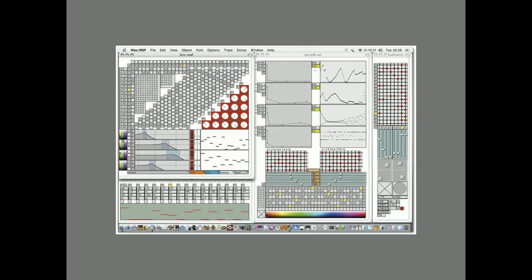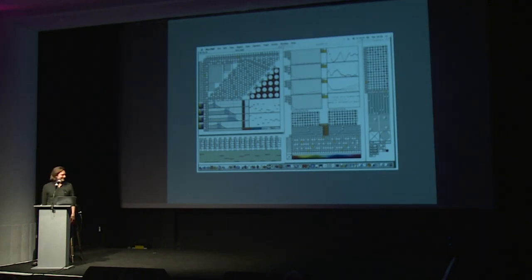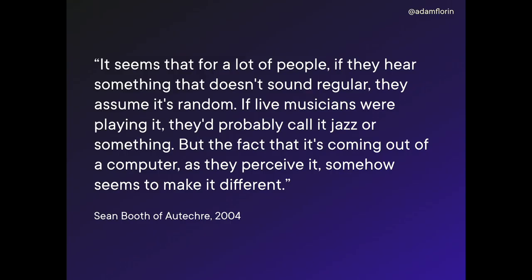You can't really talk about randomness in music without mentioning — does anybody know this screen cap? This is like the mythical Autechre Max patch. I have an Autechre quote to go with it. This is Sean Booth in 2004: 'It seems that for a lot of people, if they hear something that doesn't sound regular, they assume it's random. If live musicians were playing it, they'd probably call it jazz or something. But the fact that it's coming out of a computer somehow seems to make it different.' I got into this stuff because of Autechre's Confield which came out in 2001 — I was 18 or 19 and it was just thrilling. But to think that a lot of that stuff in retrospect wasn't random — does that change anything? It doesn't really matter.